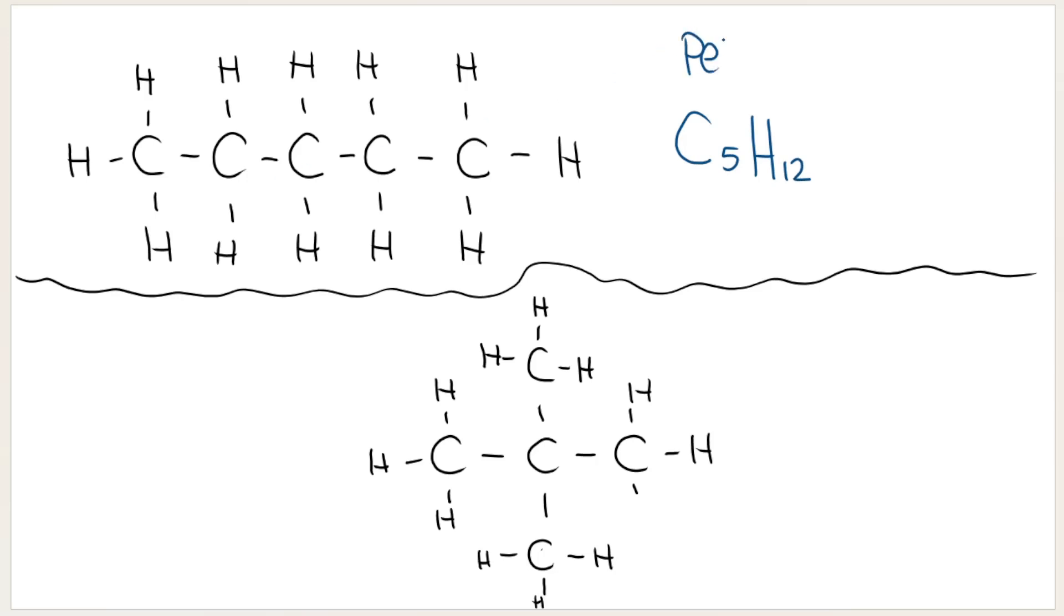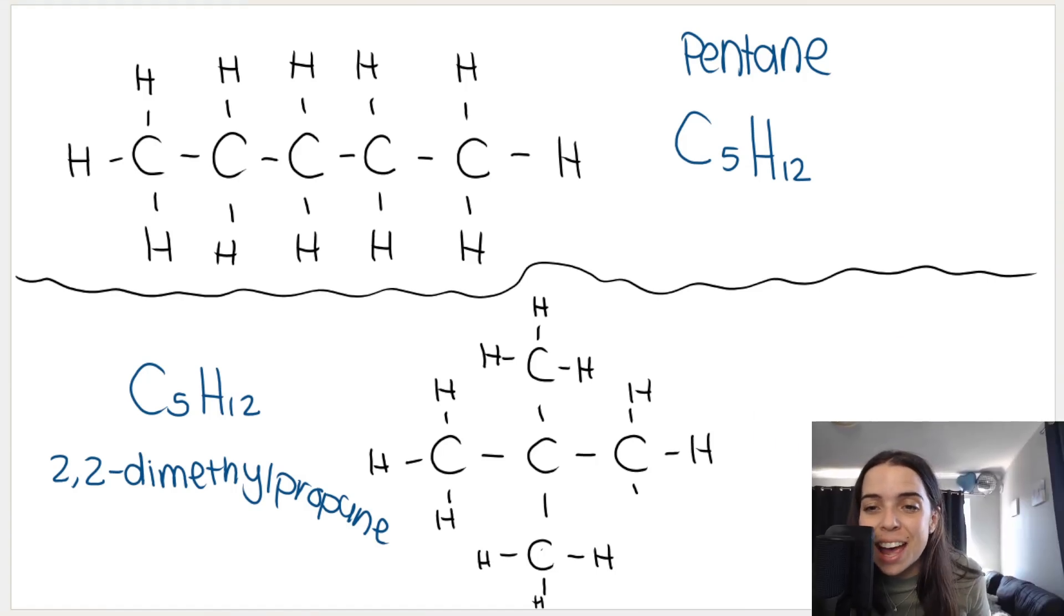This is pentane. But the one at the bottom has also got five carbons and 12 hydrogens. However, this one is not pentane. It is 2,2-dimethylpropane. If you need help with naming organic compounds, I have lots of videos on that. Just look at the link in the description box below.